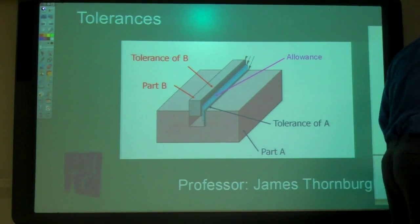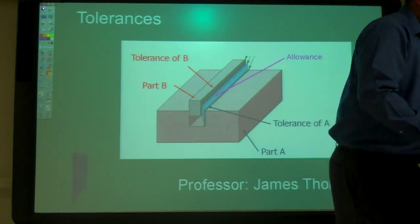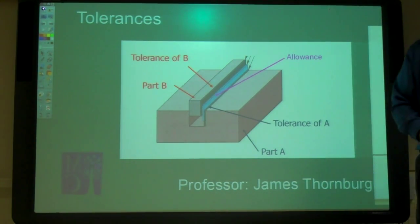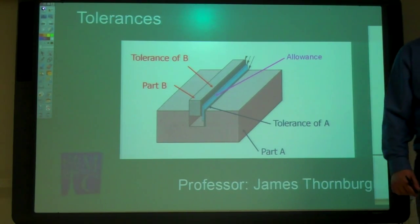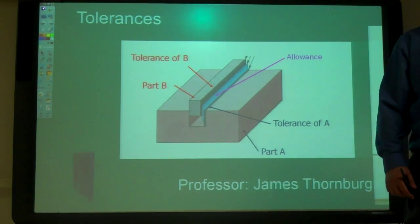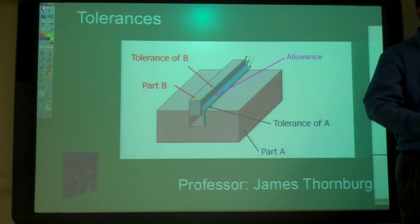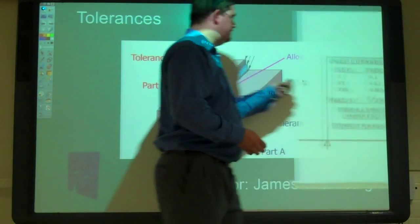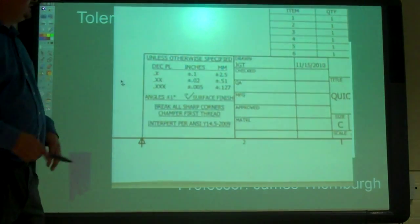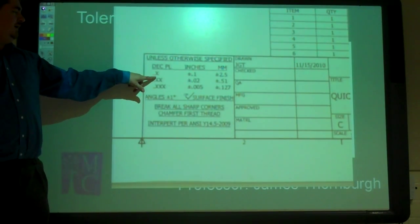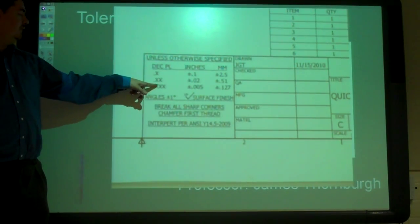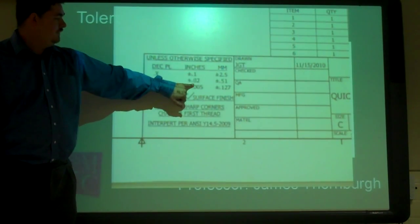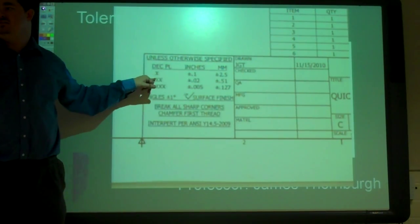So today we're talking about tolerances. What's a tolerance? Are things ever made perfectly? No, right? They're never made perfectly. And on our title blocks, there's always something like this where we have point X, point XX, point XXX.